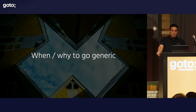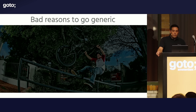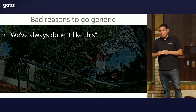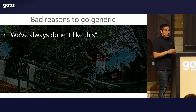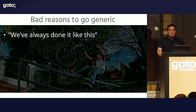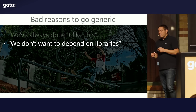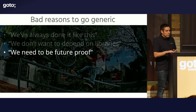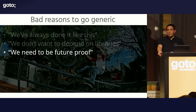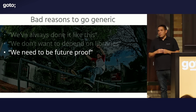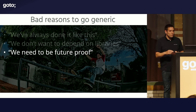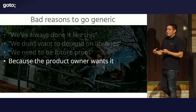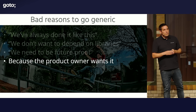So why should you go generic, and when? Let's start with bad reasons. 'We've always done it like this — we always make things generic.' That's not a reason; apply the Five Whys. 'We don't want to depend on libraries, so we're making something ourselves' — not invented here. 'We need to be future-proof, really generic to accommodate future changes' — well, we all heard how well that worked with the really flexible application. 'Because the product owner wants it' — the product owner should think about product stuff, not technical stuff. 'Because the architect wants it' — that's my favorite.